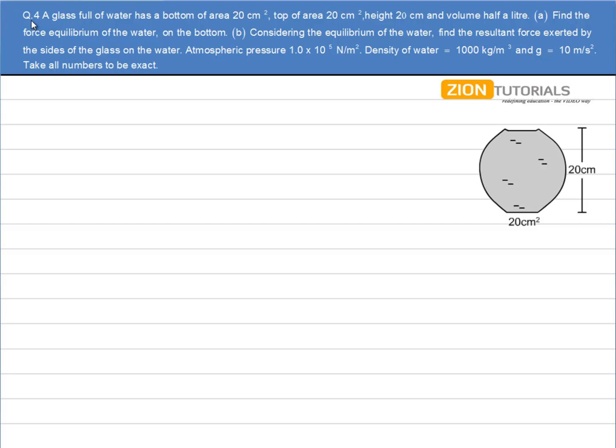A glass full of water has a bottom of area 20 cm², top area 20 cm², height 20 cm, and volume half a liter. Find the force equilibrium of the water on the bottom. In the first case, I have to calculate the force acting at the bottom.